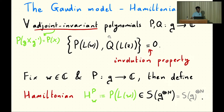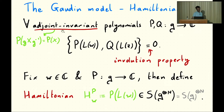The advantage of writing the Poisson brackets of the phase space in this form is that it immediately produces a very large family of integrals of motion which Poisson commute. In particular, if you choose adjoint invariant polynomials P and Q — invariant under the adjoint action — and you evaluate these polynomials on the Lax matrix at different parameters Z and W, these Poisson commute by virtue of the fact that the Poisson bracket here is a Lie bracket.